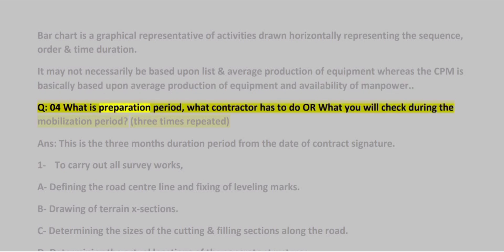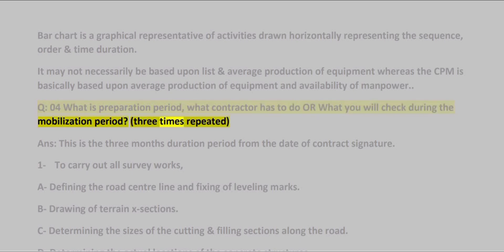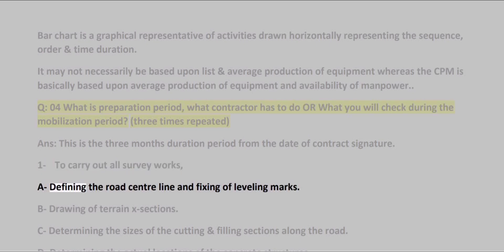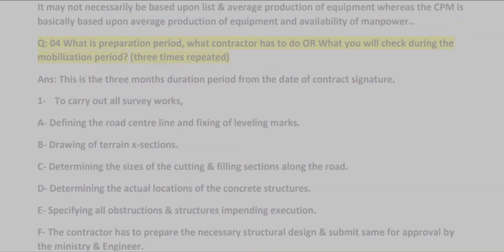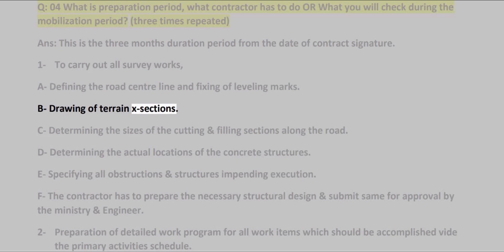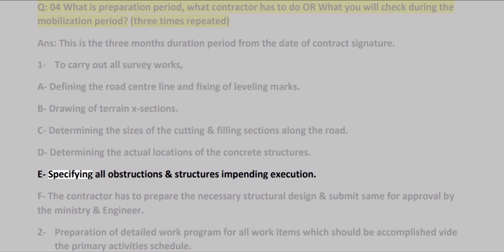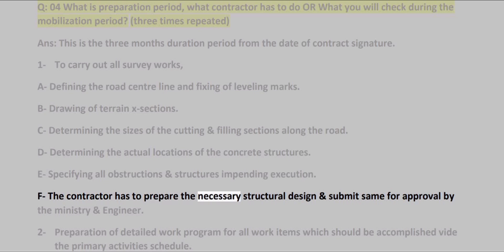Q04: What is the preparation period — what does the contractor have to do, or what will you check during the mobilization period? ANS: This is a 3-month duration period from the date of contract signature. 1. To carry out all survey works: A) defining the road centerline and fixing of leveling marks; B) drawing of terrain and cross-sections; C) determining the sizes of cutting and filling sections along the road; D) determining the actual locations of concrete structures; E) specifying all obstructions and structures impeding execution; F) the contractor has to prepare the necessary structural design and submit for approval by the ministry and engineer.